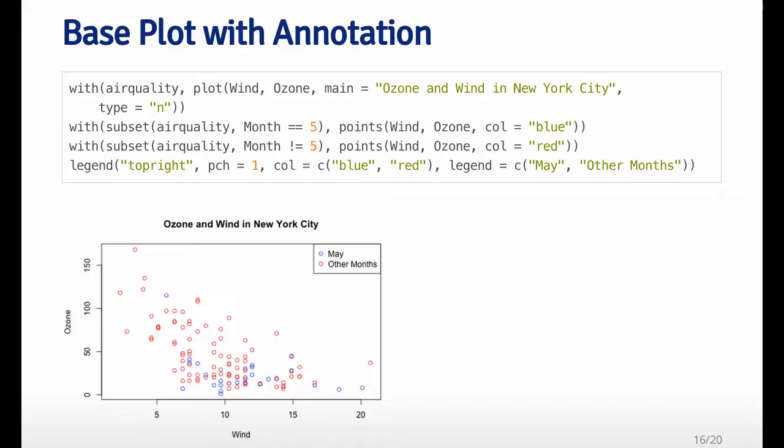And then in order to put the data into the plot, I kind of go through subsets of the data frame to add the data for the month of May and add data for the month of not May. So for the month of May, I make that color blue. And then for the other months that are not equal to May, I just make that color red.